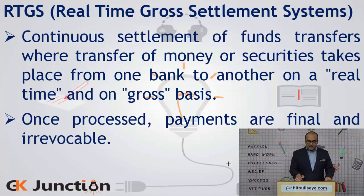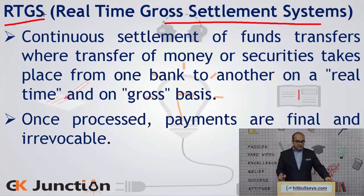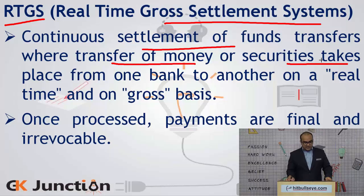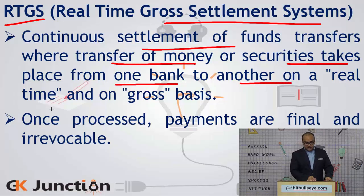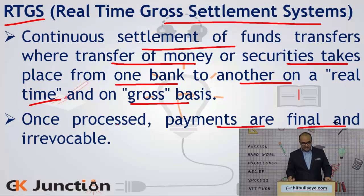For greater amounts, we have what is called Real-Time Gross Settlement System, or simply RTGS. It is a continuous settlement system where transfer of money or securities takes place from one bank to another on a real-time and gross basis. Once processed, the payments under RTGS are final and irrevocable.